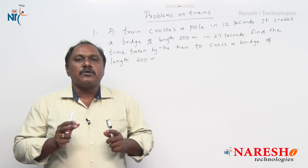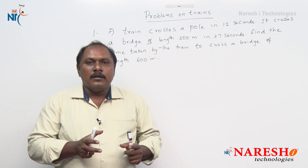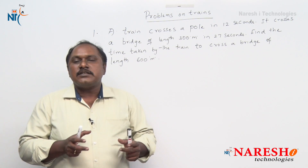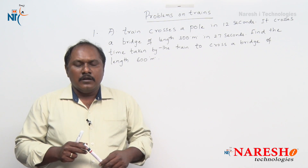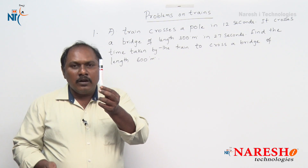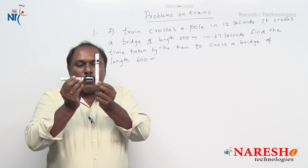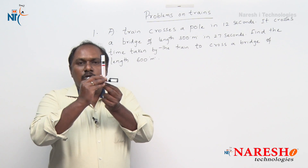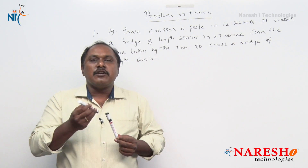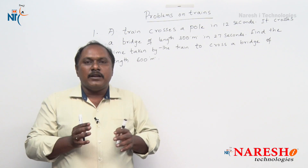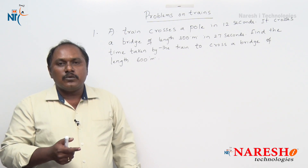If a train has to cross a pole — and it can be a pole, a tree, a man, a woman, and so on — what is the distance the train has to travel? If this is a pole and this is a train, the train has to travel a distance equal to the length of the train. So the first basic point is: to cross a pole, a train has to travel a distance equal to the length of the train.